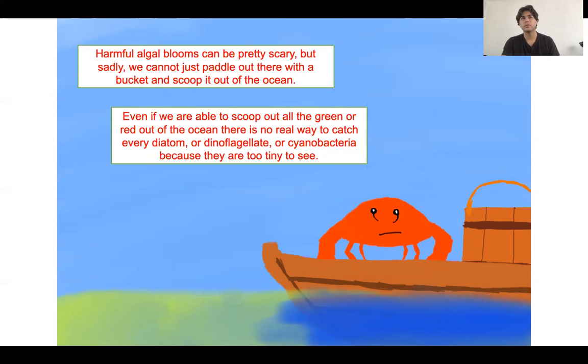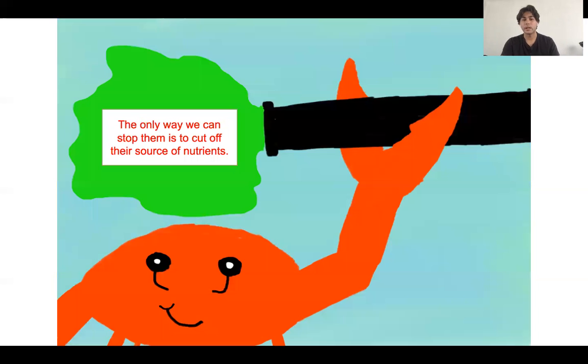So the only real way to stop an algal bloom is to cut its source of nutrients. A lot of times the nutrients actually come from human fertilizers that we use for plants and stuff, because those fertilizers pack a lot of nutrients for other plants. And of course, since algal blooms or those tiny algal species are considered tiny plants, or you can think of them as tiny plants, they take in the same nutrients. So the only way to really stop an algal bloom is to cut its source of nutrients, which often come from human resources.